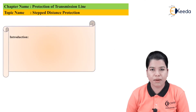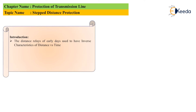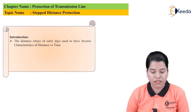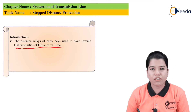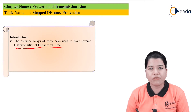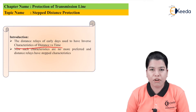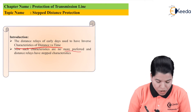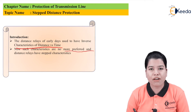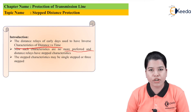Let us study the introduction to the stepped distance protection scheme. The distance relays used earlier had an inverse characteristic of distance versus time. The meaning of inverse characteristic is that as the distance goes on increasing, the operating time goes on decreasing. But such characteristics are no more preferred, and these days distance relays have the stepped characteristic. The stepped characteristic used for stepped distance protection comes in two types: single step and three step protection.